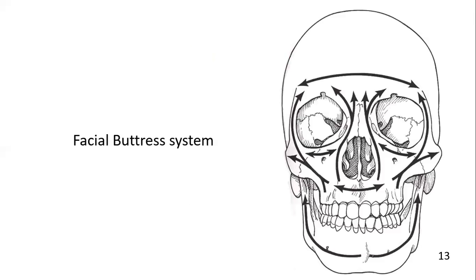Here you can see the facial buttress system. This is the horizontal component — it is the frontal bar. This is the nasomaxillary, which is the vertical component. This diagram shows both vertical and horizontal components. The mandible contains both a horizontal component and a vertical component, as we will see in the next slides.